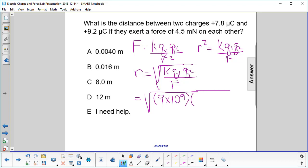Charge 1 is 7.8 times 10 to the minus 6 coulombs, that's what micro means. And the other charge is 9.2 times, running out of room here, 10 to the minus 6.